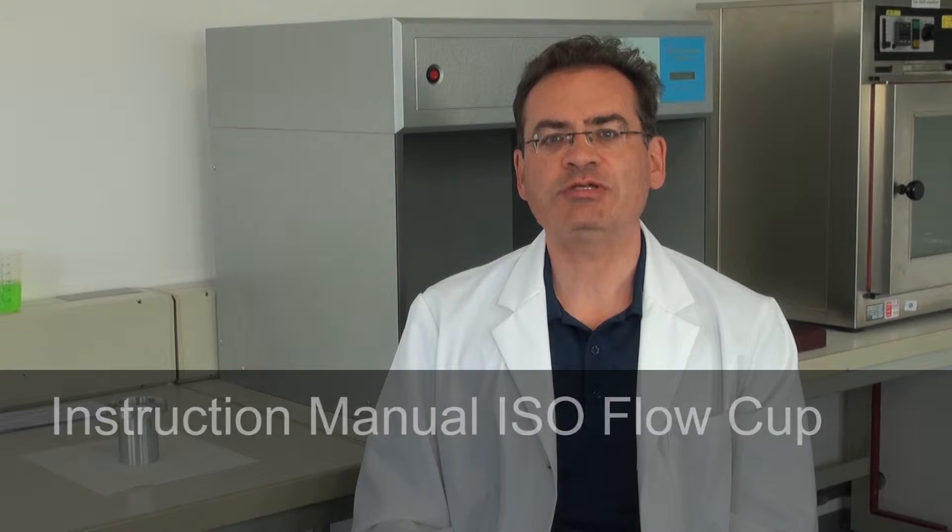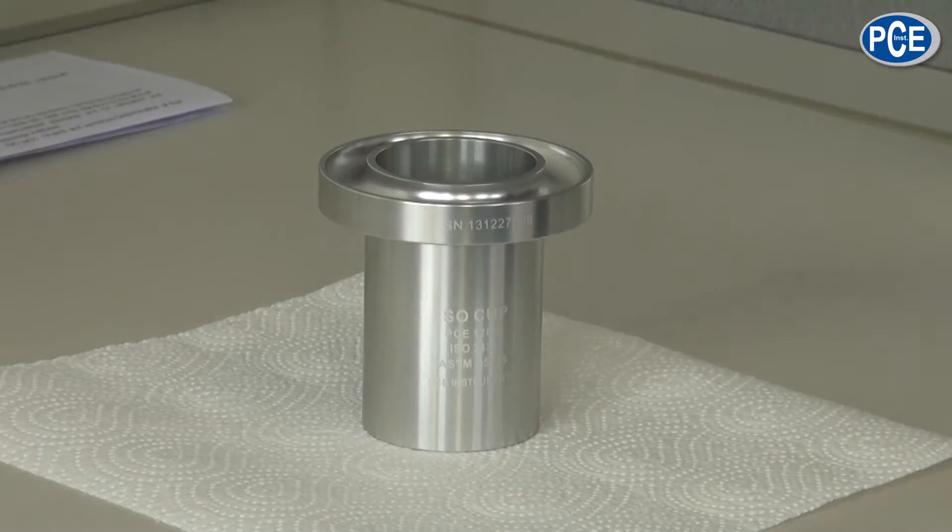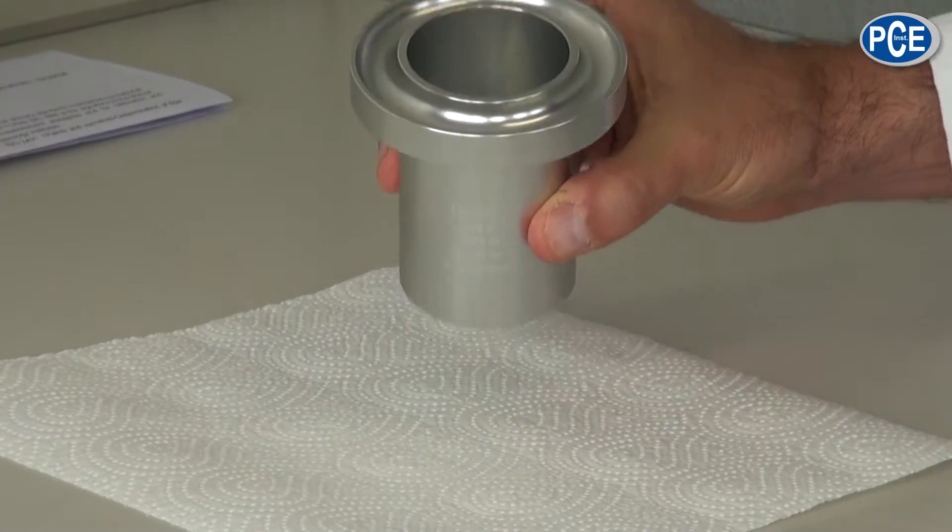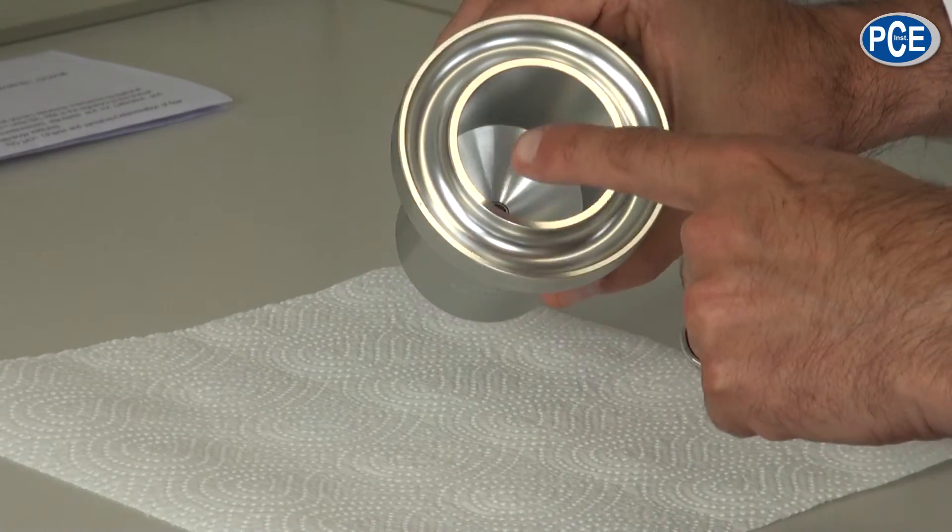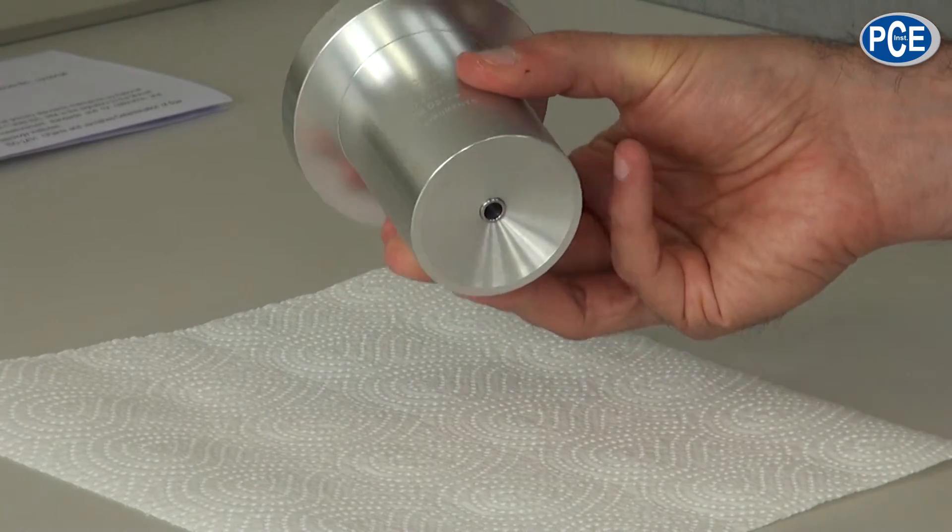I would like to show you today the ISO overflow cup PC-128. The overflow cup is made of anodized aluminium. At the top it has an overflow rim and on the base it has an outlet nozzle.